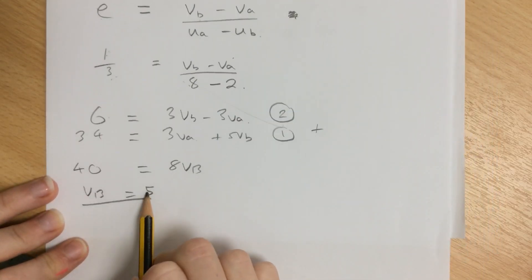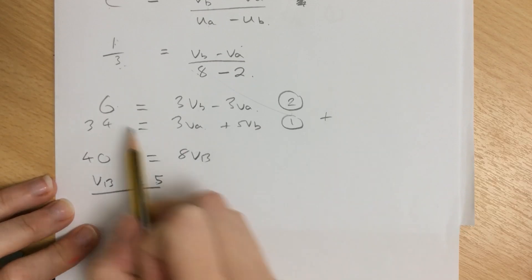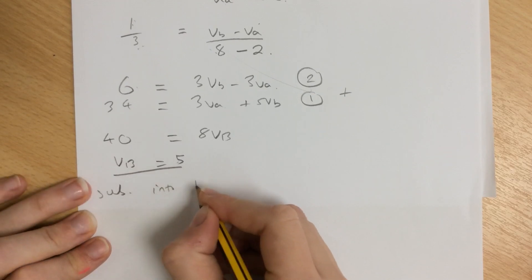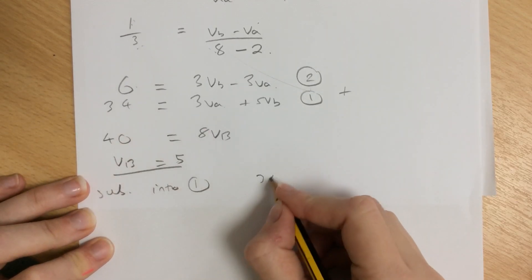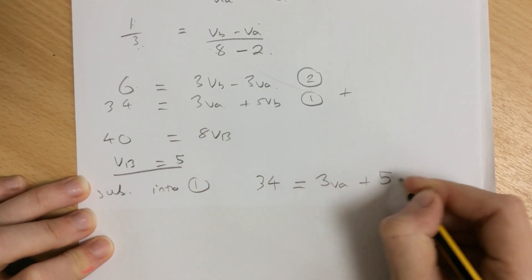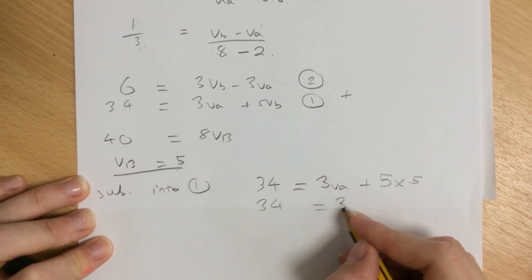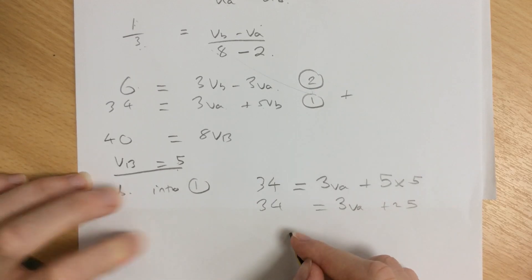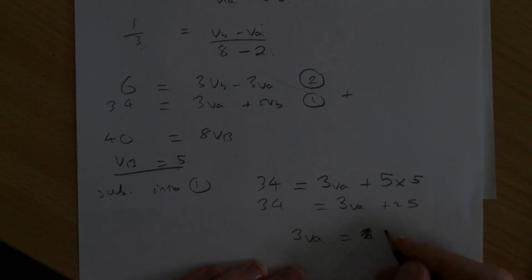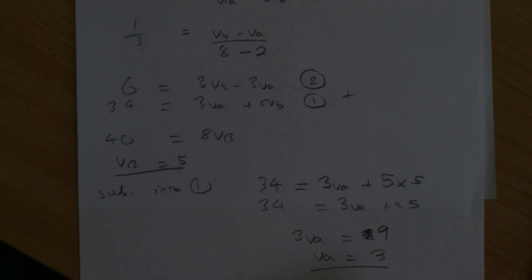We're not finished. We need to substitute this back into one of the equations. Substituting into equation 1: 34 equals 3VA plus 5 times 5. So 34 equals 3VA plus 25, which means 3VA equals 9, and VA equals 3.